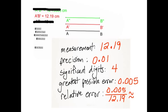As indicated up here, for A prime, B prime. Precision is to 1 one-hundredth, significant digits are 4.